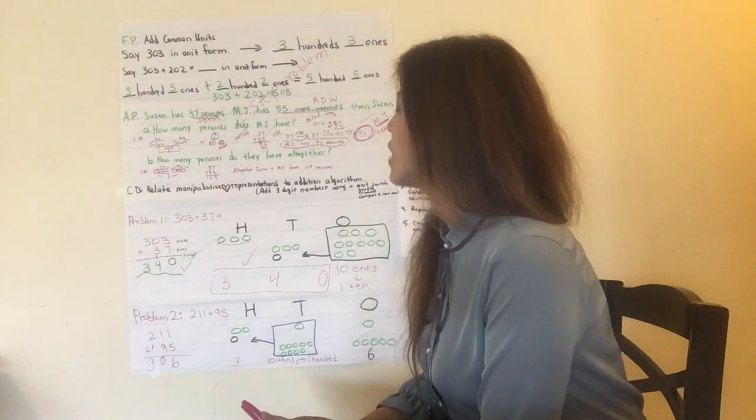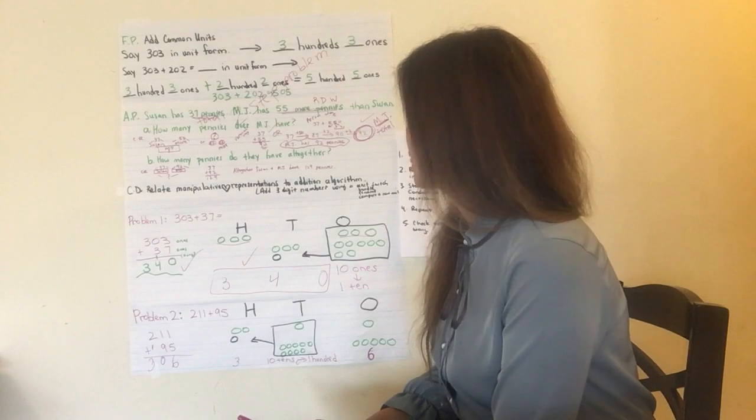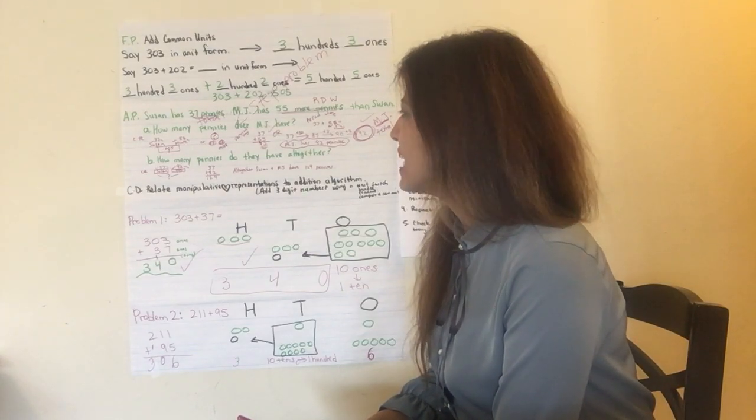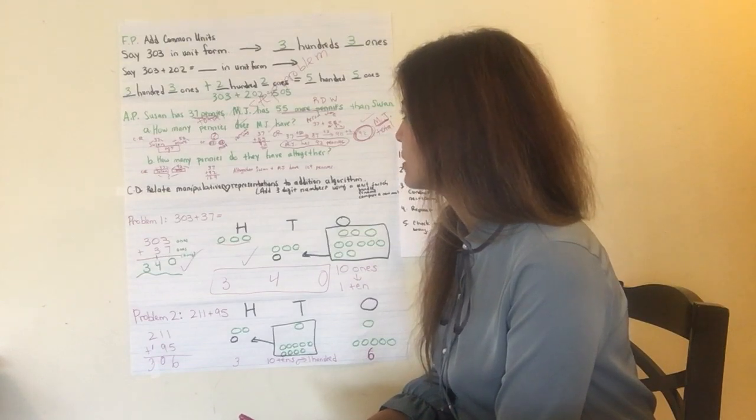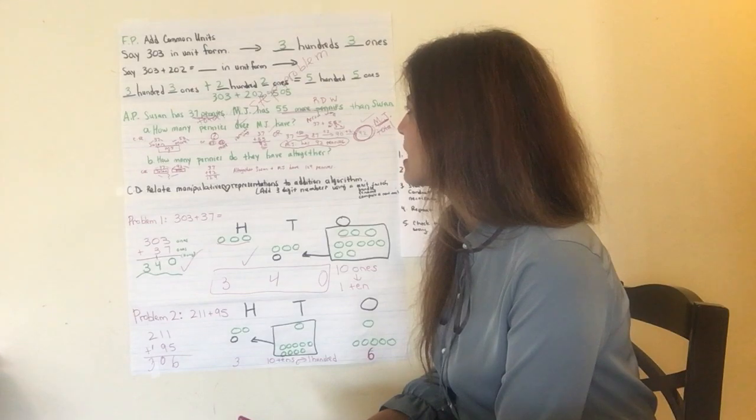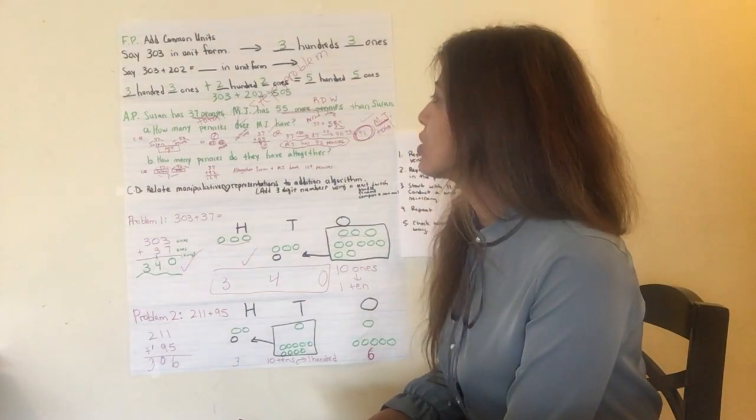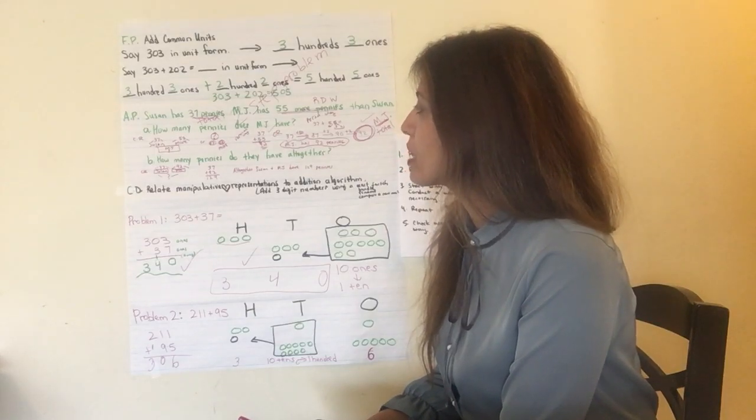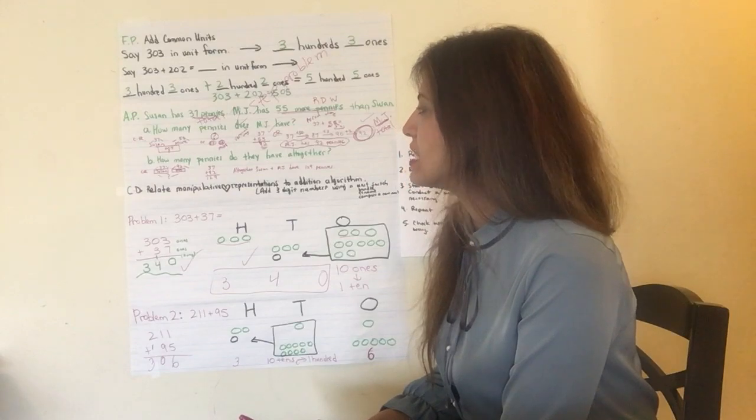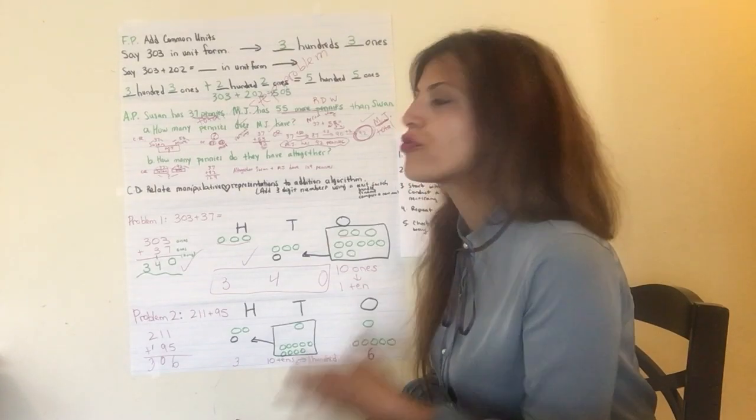Let's move on to our application problem. Susan has 37 pennies. MJ has 55 more pennies than Susan. A, how many pennies does MJ have? B, how many pennies do they have altogether? So this is a two-step problem. Let's read this again. When you use the read-draw-write strategy, you want to make sure that you're really understanding what the application problem is asking you.